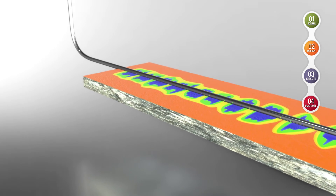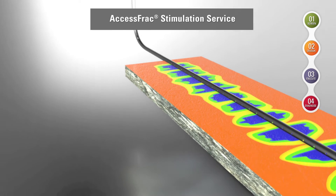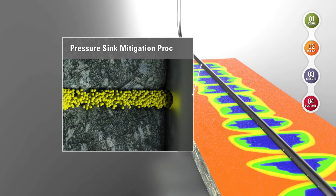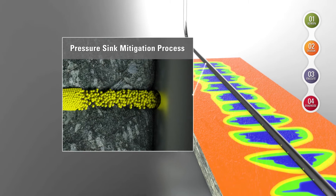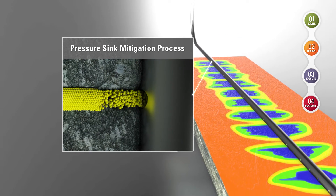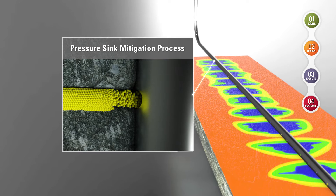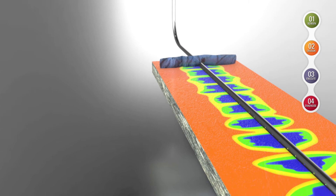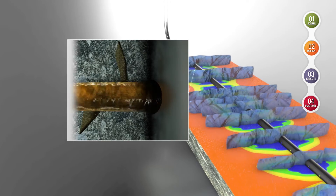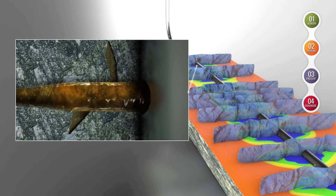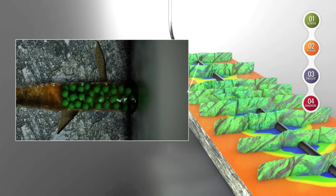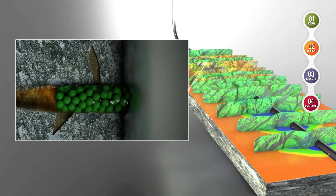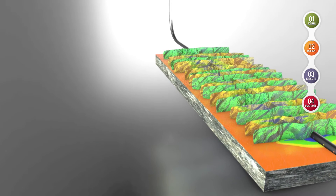In Step 3, we execute the refract design by leveraging Access Frac Stimulation Service. Our proprietary pressure sink mitigation treatment prepares the well for the refract by controlling leak-off into pressure-depleted intervals. High-performance diversion spacers are pumped on demand to reconnect with pre-existing fractures and distribute fluid to the new proppant targets, distributing fluid to all targets along the wellbore.